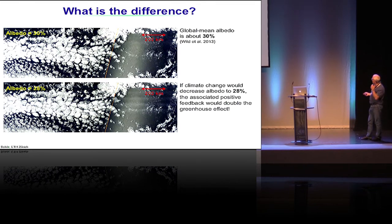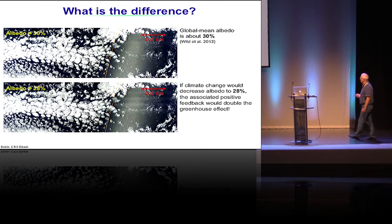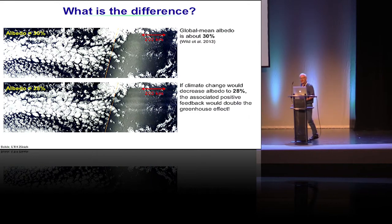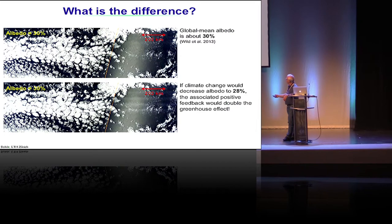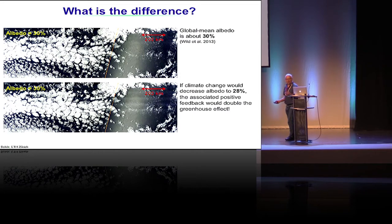But the change of global albedo from 30% to 28% would actually change the climate sensitivity by a factor of two. So if climate change decreases albedo to 28% in the global mean, the associated positive feedback would double the climate change signal. This is 28%, 30% - that is the difference we are after, and it really shows this is a challenging problem.